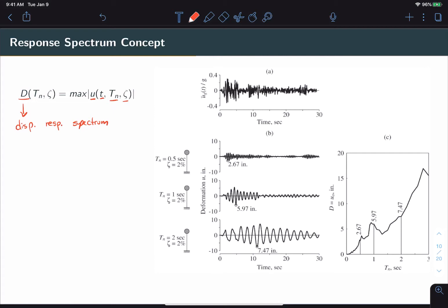When we take the maximum absolute value of this response to obtain D, we eliminate the influence of time. And so our displacement response spectrum is ultimately a function of the natural period and the damping of the system.